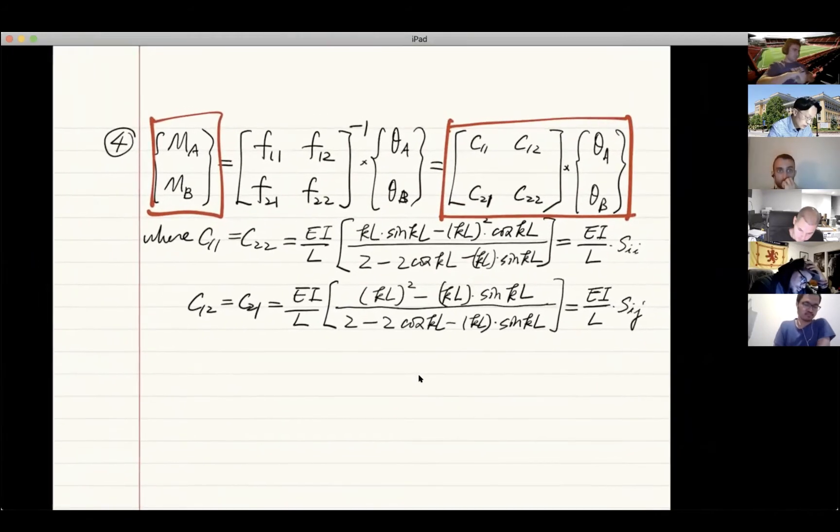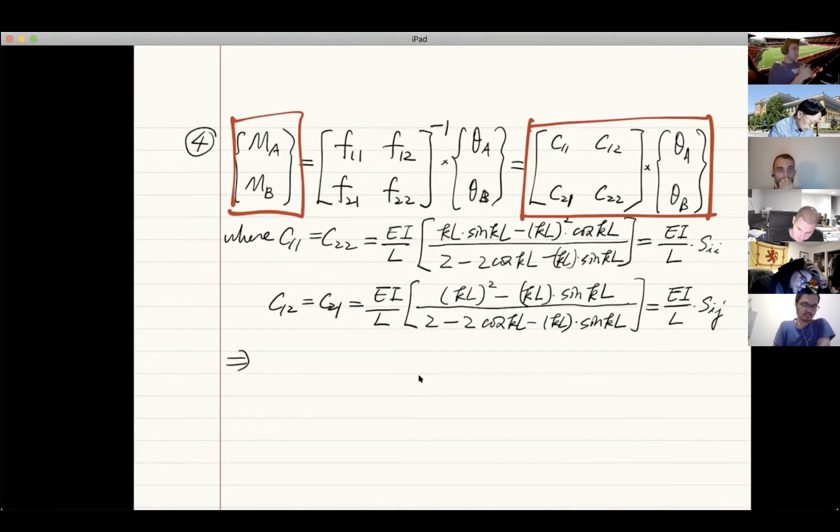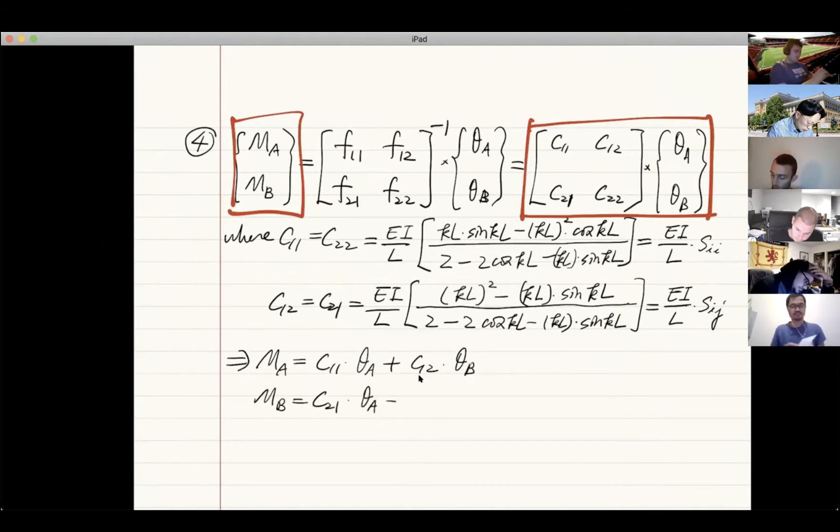If you look at this definition, you can easily write it this way. You will know that MA is just c11 times theta A plus c12 times theta B, and MB is just c21 times theta A plus c22 times theta B. Very straightforward.